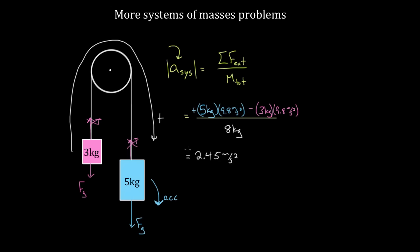This is a fast way to get the system's acceleration, but you have to be careful. If the question asks for the acceleration of the five kilogram box specifically, that would be negative 2.45 meters per second squared because it's accelerating downward and down is typically negative. The three kilogram box, however, would be positive 2.45 meters per second squared. When applying the result to an individual box, make sure to use the correct sign for that particular box.